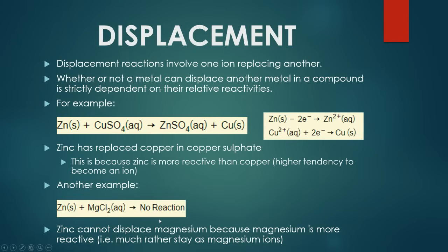Basically, if we were to sum it up, a metal can displace another metal in a compound only if it is more reactive or higher up in the reactivity series. Zinc is higher up than copper in the reactivity series, therefore they swap places. Zinc is not higher than magnesium, and so you don't get any sort of displacement reaction happening in this scenario.